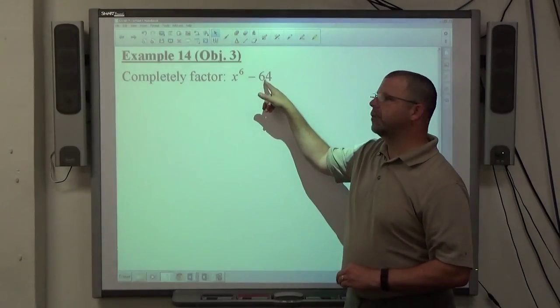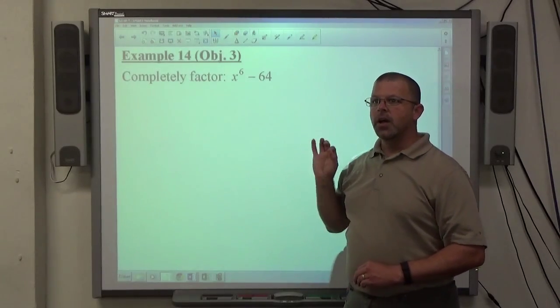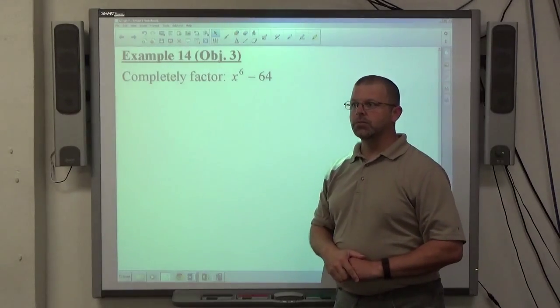X to the 6 is X squared cubed, 64 is 4 cubed, X to the 6 is X cubed squared, and 64 is 8 squared. Always do difference of squares first, all right?